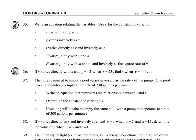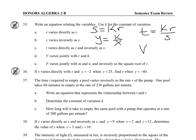For the variation problems, anytime it says a variable varies, that's the variable that is isolated on the side of the equal sign. So S varies directly with R. Y varies inversely with X. T varies directly with R and inversely with S. V varies jointly — that's the same as directly. And lastly for E, F varies jointly with M and N, and inversely with the square root of V.